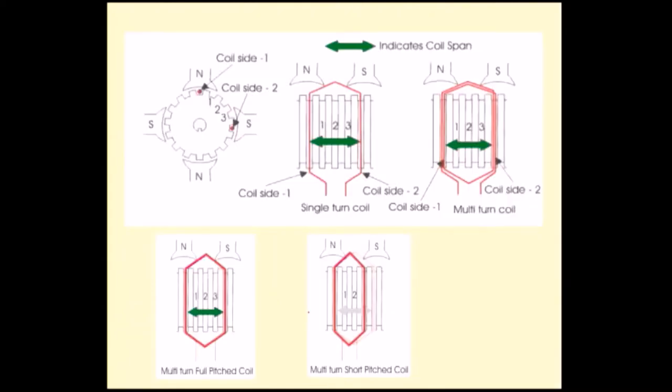Pole pitch is the center to center distance. This is the winding starting point on one side, and the other side is placed here. This represents 180 degrees electrical.